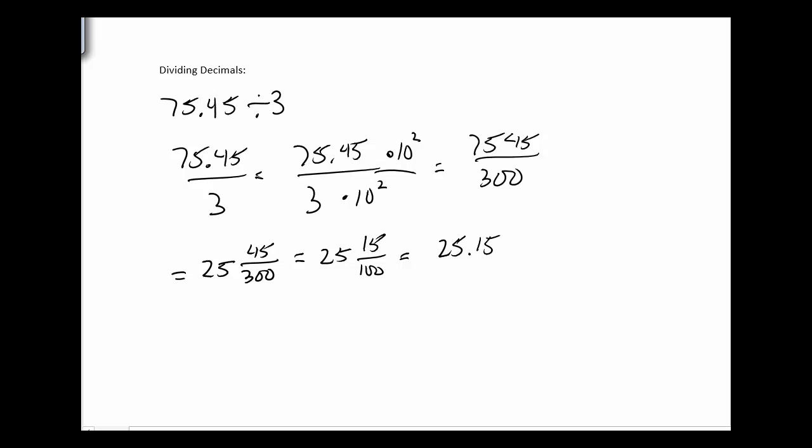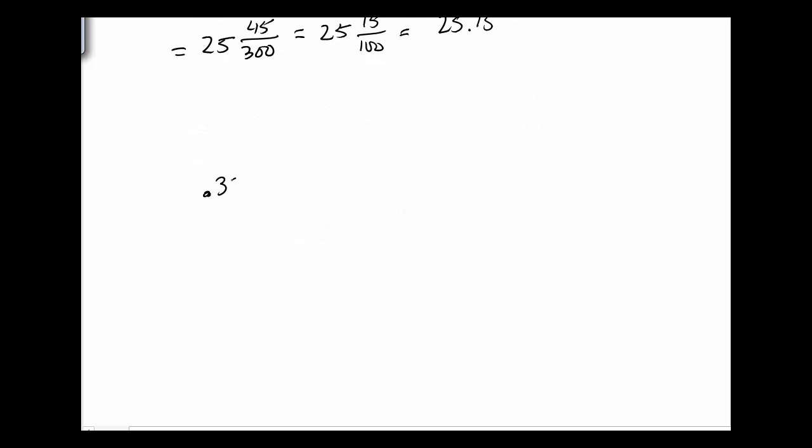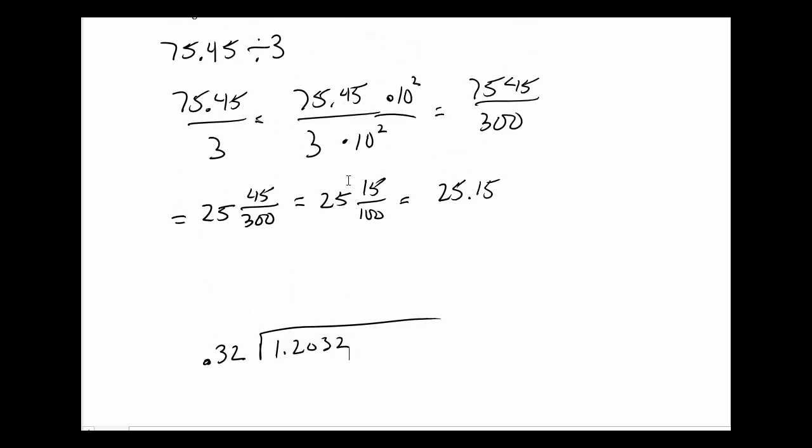But notice how we went about this. We used some fraction, we used expanded form to divide, convert it into some fraction rules. And then we used already established fraction rules to simplify the problem down. Now let's modify this to have a decimal involved in the divisor. So let's say we were doing 0.32 into 1.2032. And the question is, what do we do about that decimal?